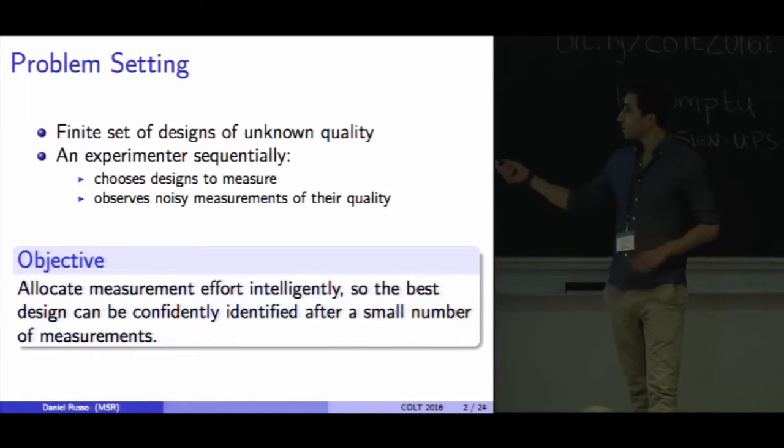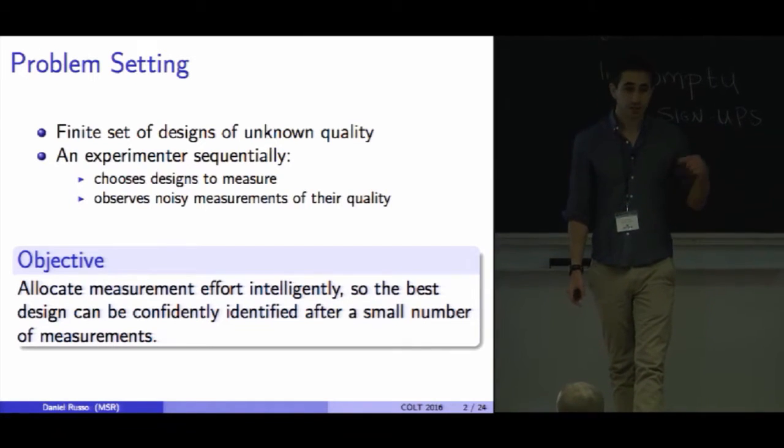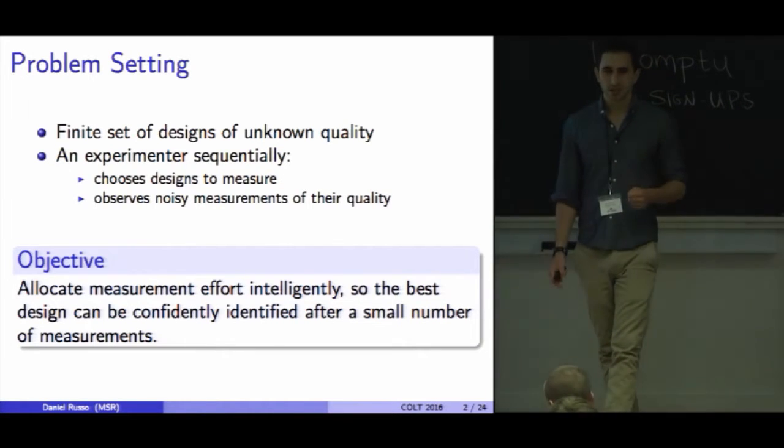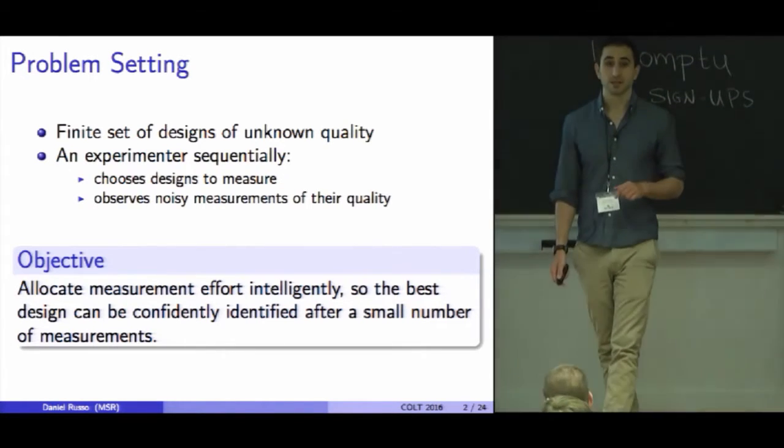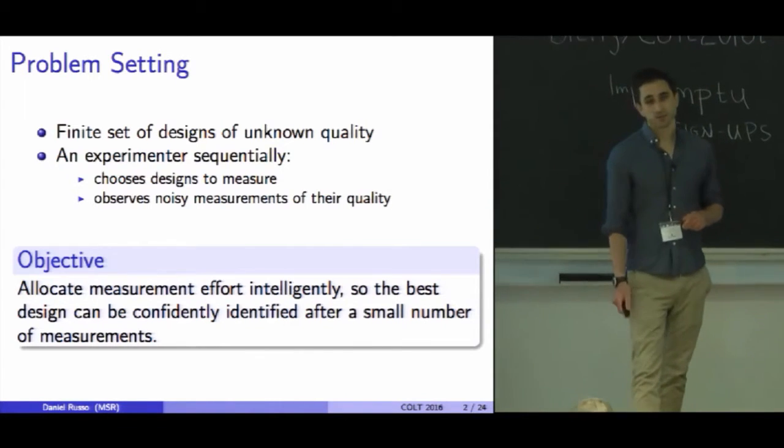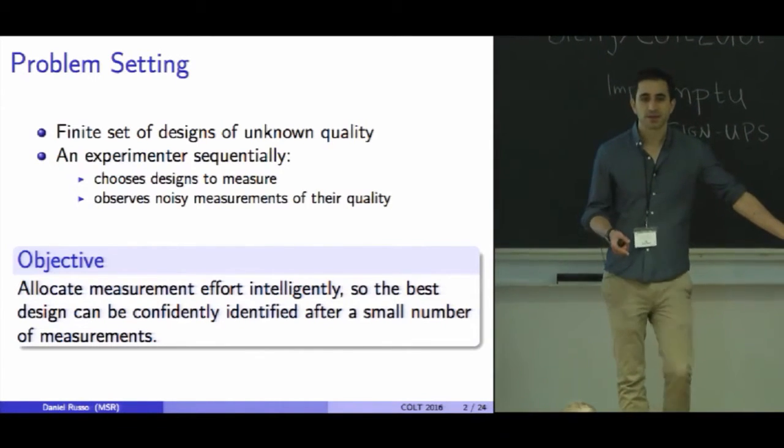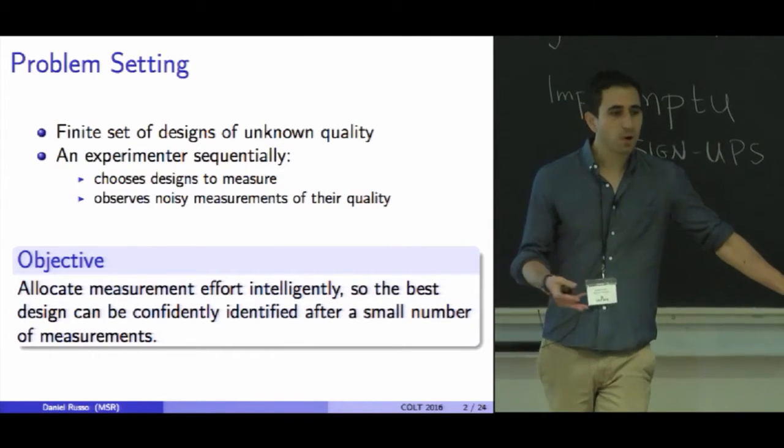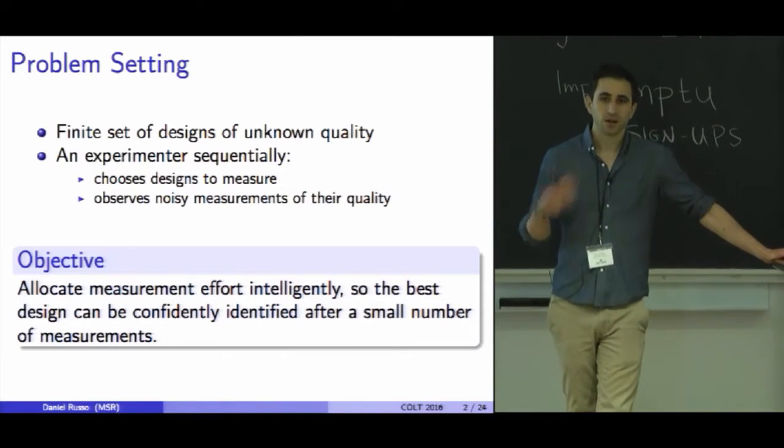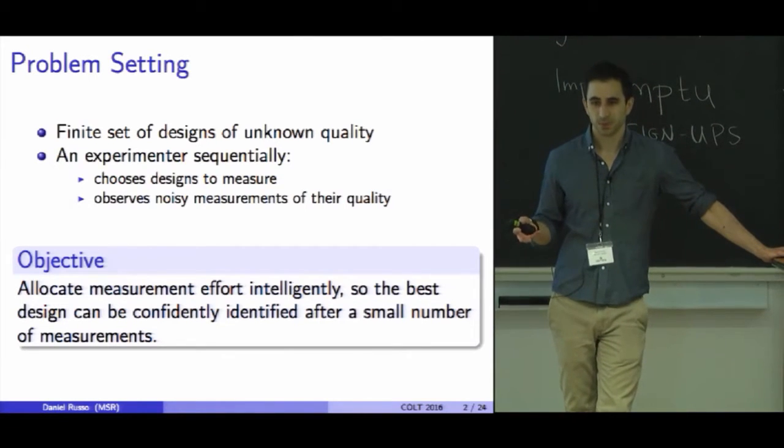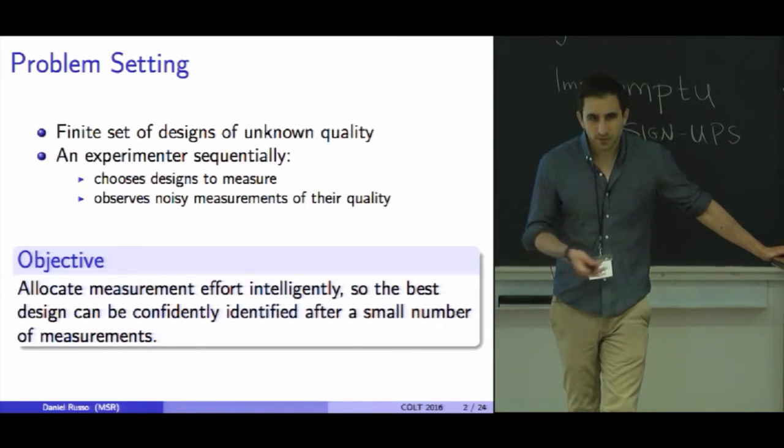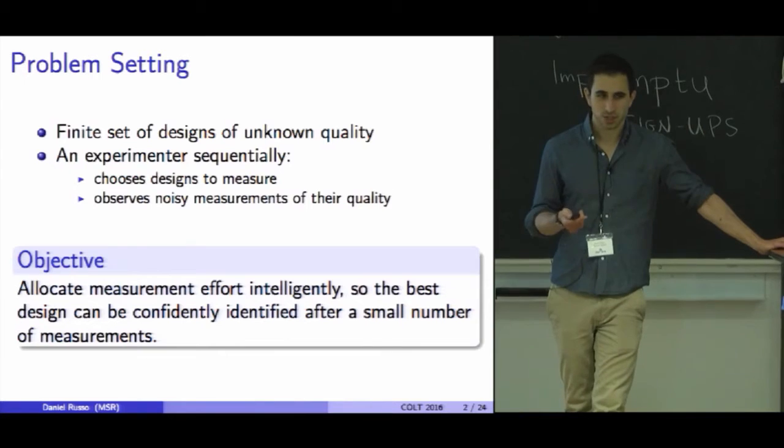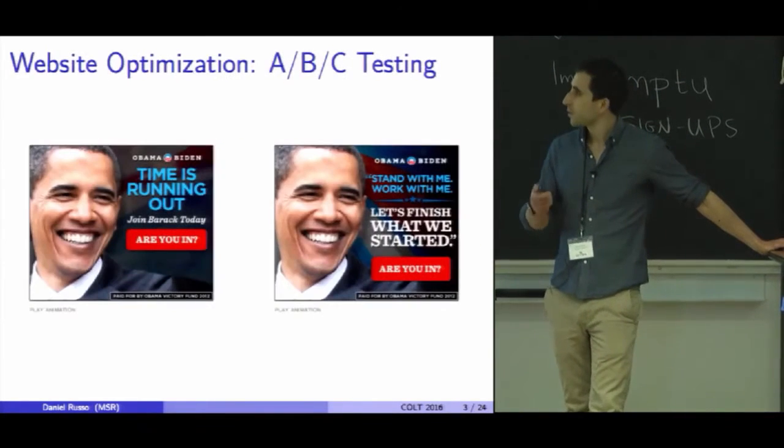In particular, this experimenter is going to sequentially select designs to measure, and they're going to observe noisy signals of the quality of the underlying designs. The objective is to allocate this measurement effort in a very intelligent way, so that after a reasonably small number of measurements, we can confidently tell you which design is the best one. This is a pretty natural problem, and it's maybe the most basic example of stochastic optimization on which many other things are built.